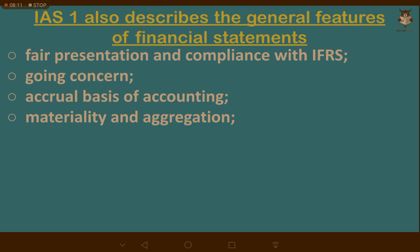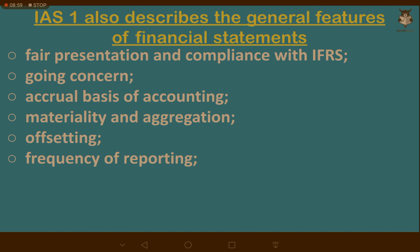IAS 1 does not allow offsetting. For example, in the Statement of Cash Flows, if you sold fixed assets and also bought fixed assets, you cannot offset the receipts from sales against the cash spent on purchases — you must disclose them separately. Offsetting hides crucial information from users. In some limited cases IAS 1 permits offsetting, but it specifically states those scenarios. IAS 1 also requires at least annual reporting to users of financial statements.